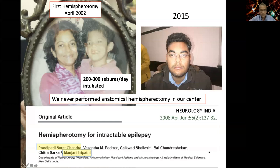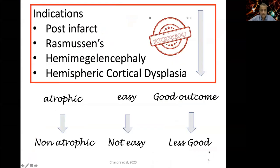About five years after that case we published the first-ever series of hemispherotomy from India. As Professor Machado's excellent talk made clear, hemispherotomy is a single technique applied to a heterogeneous group of pathologies — from something as straightforward to something as complex as hemimegalencephaly, which I believe is one of the most difficult pathologies to either treat or operate in the brain.